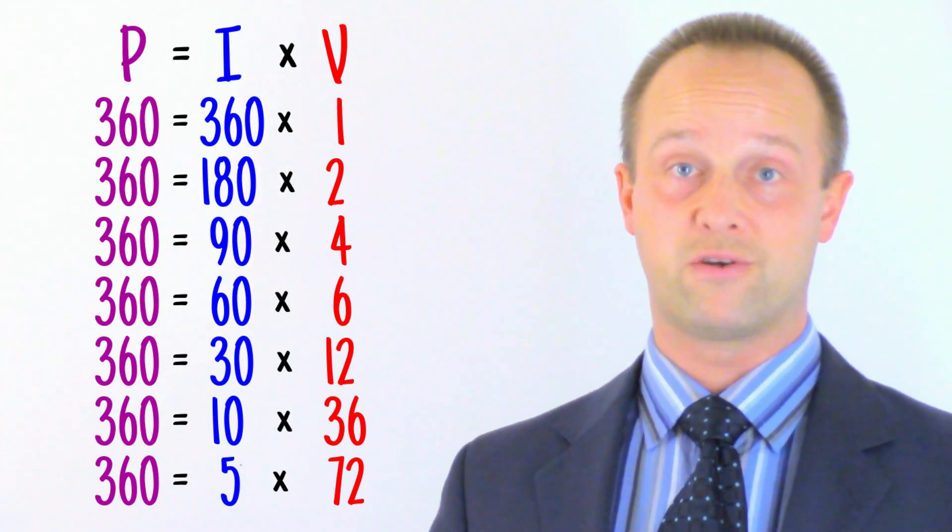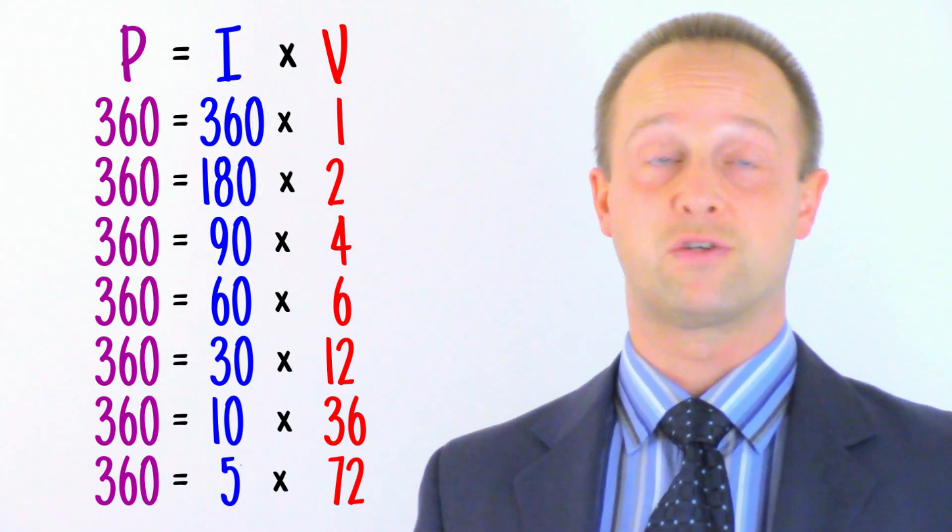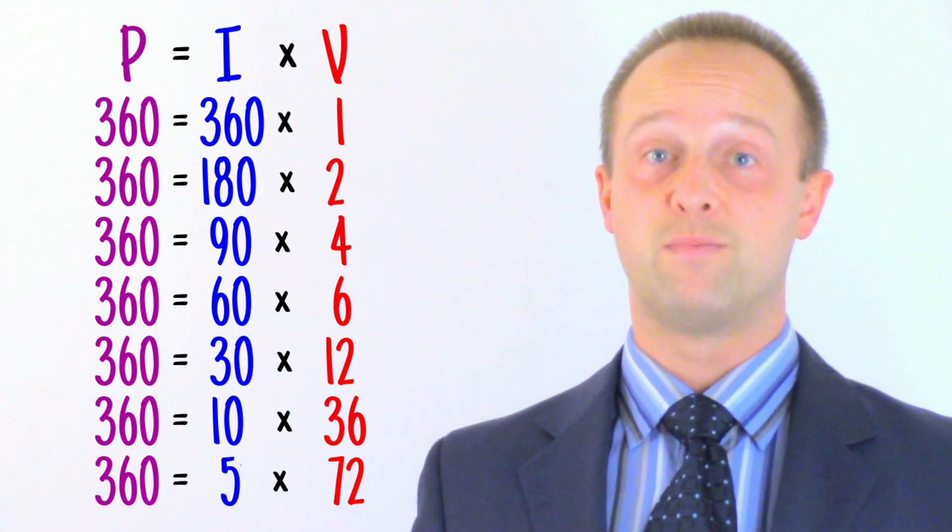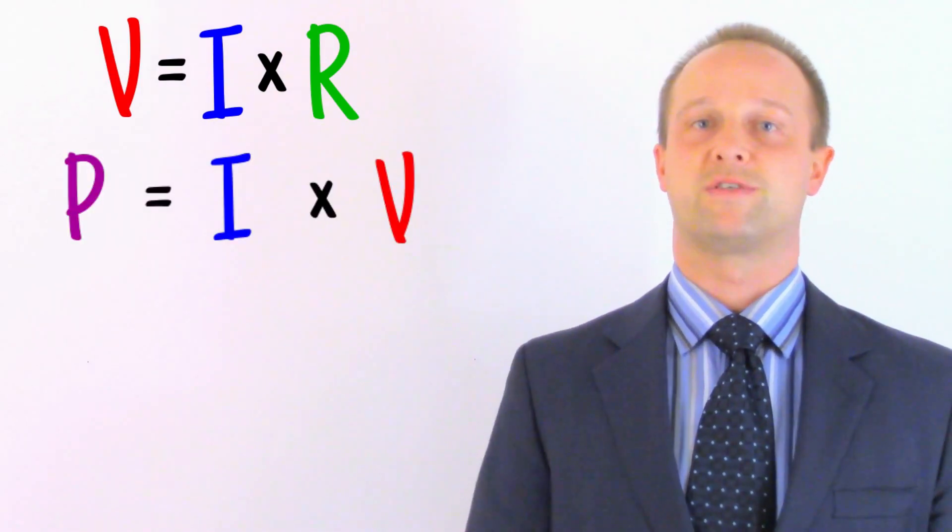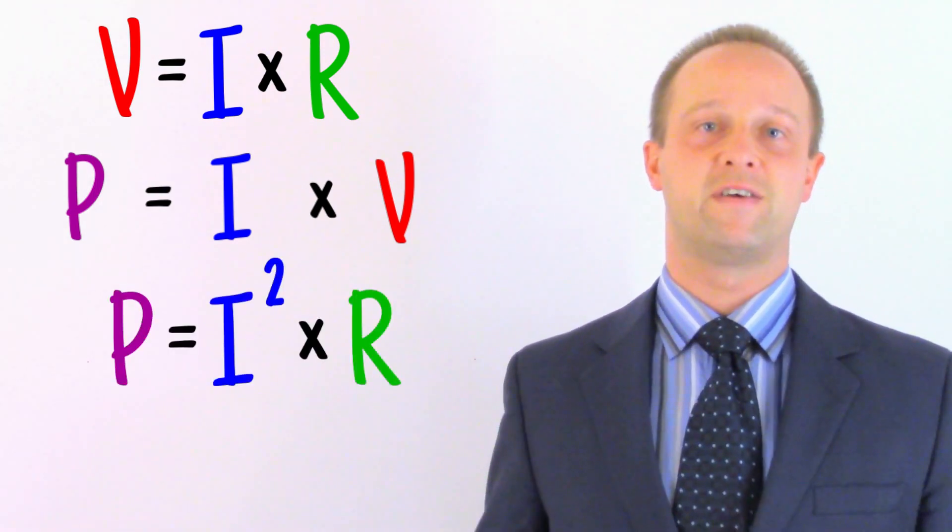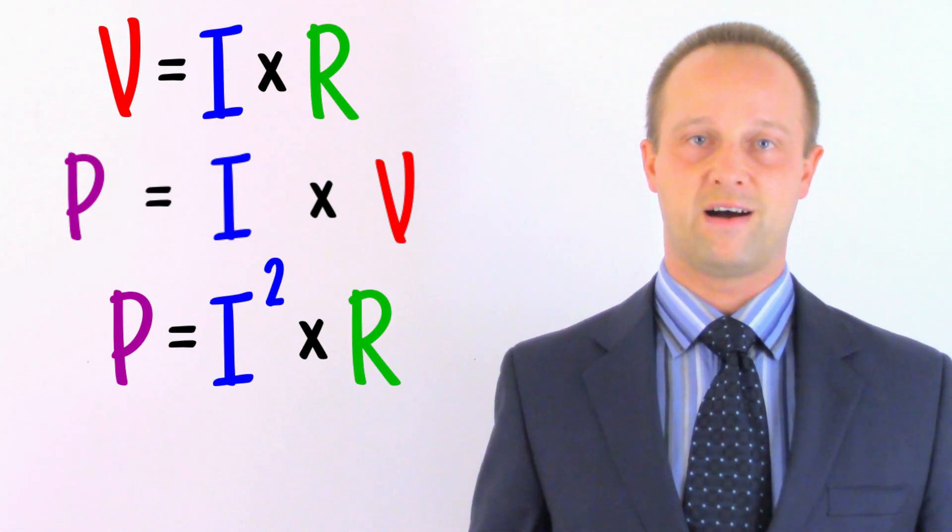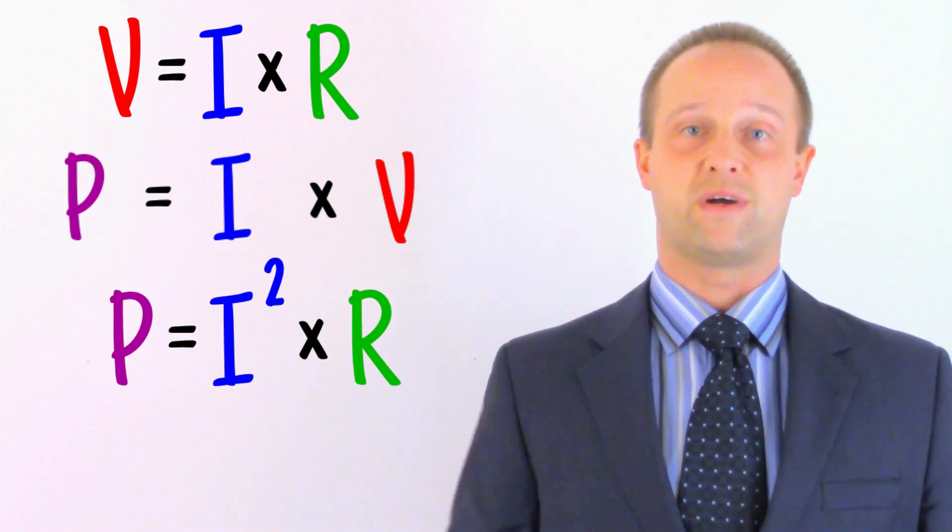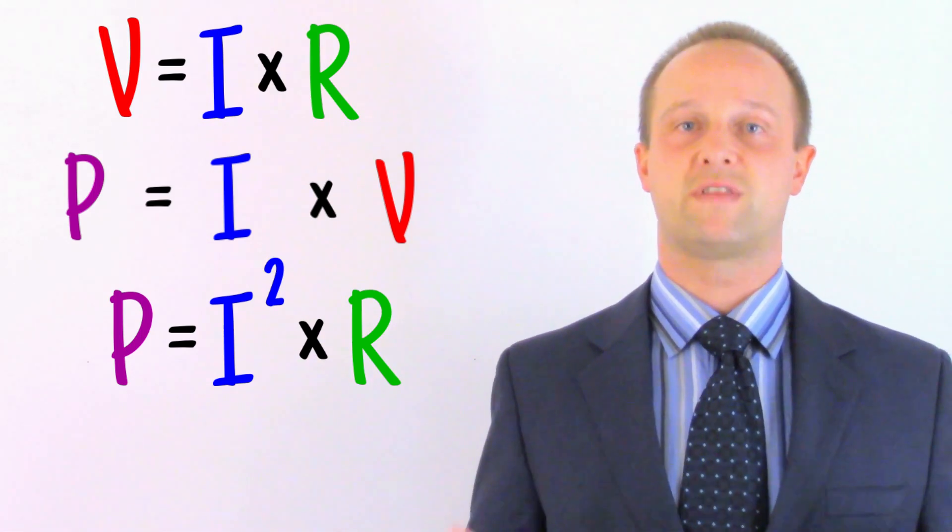If you're wondering how we increase the voltage, we use a step-up transformer. Please check my video on transformers here to learn more about how they work. So, through using V equals IR to find resistance, P equals IV to understand the power, and the principle of conservation of power, and substituting the first equation into the second one to get P equals I squared R, we can see why we transmit electricity at such high potentials, typically hundreds of thousands of volts.